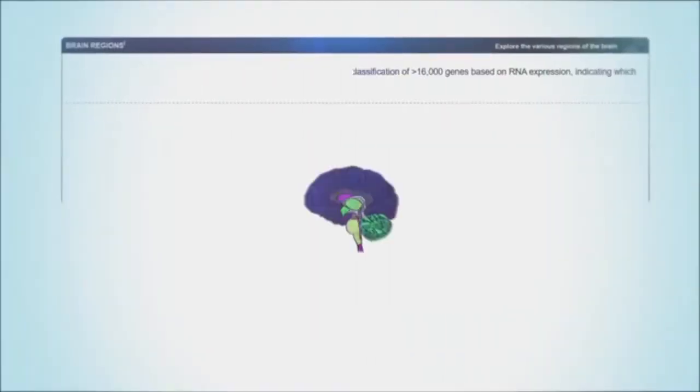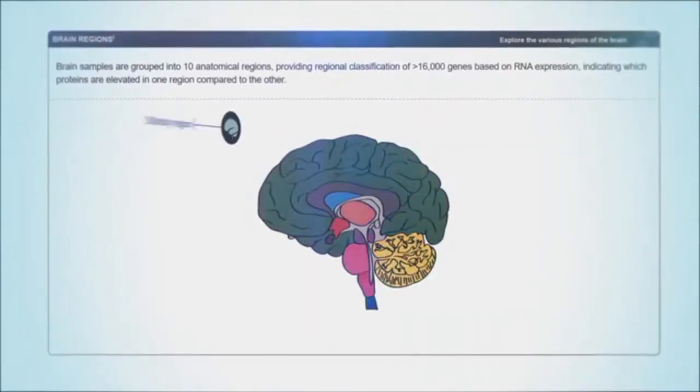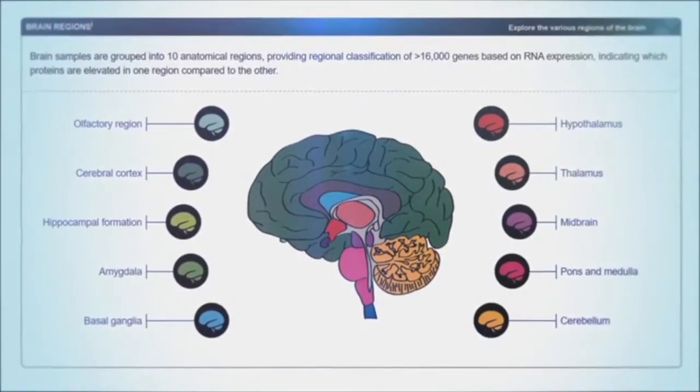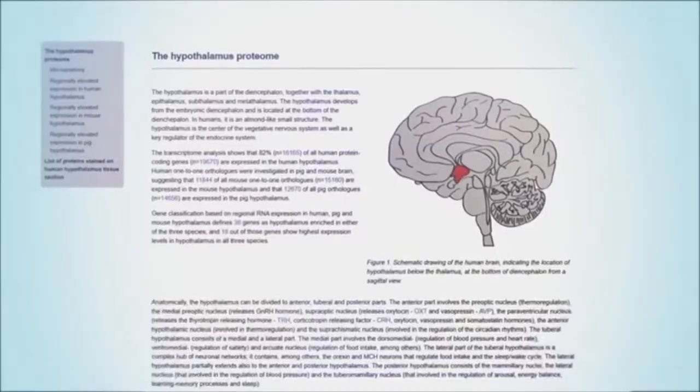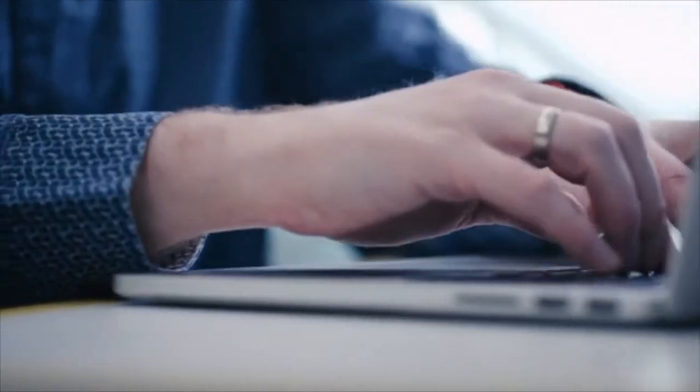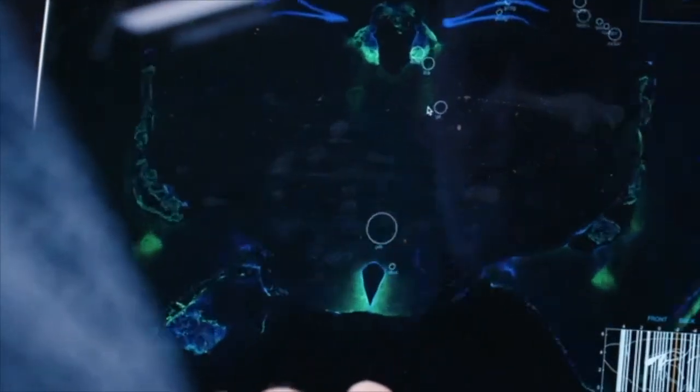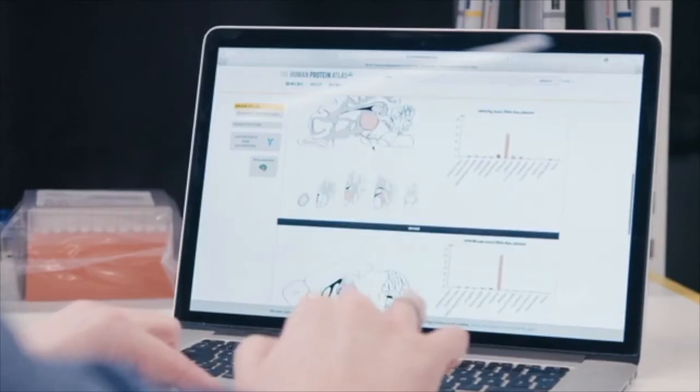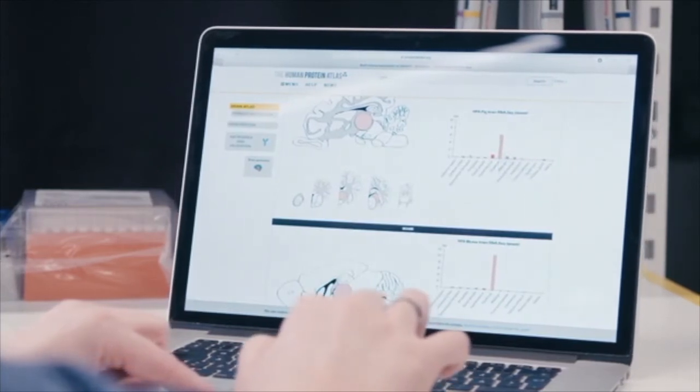The Brain Atlas shows the proteins localized in the different regions of the brain. A large number of regions of the brain have been analyzed and displayed not only for humans, but also for pigs and mice. This allows scientists to explore the presence or absence of a particular protein in the human brain and also to identify differences in protein profiles between these three mammalian brains.